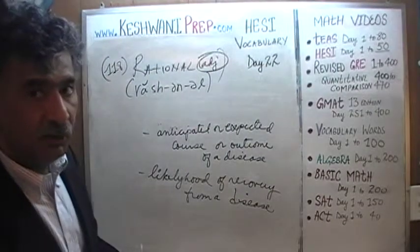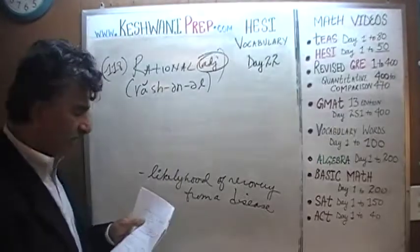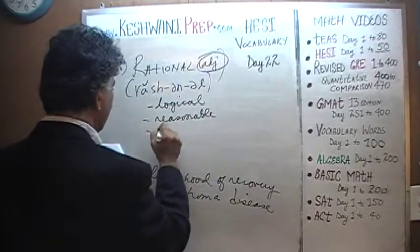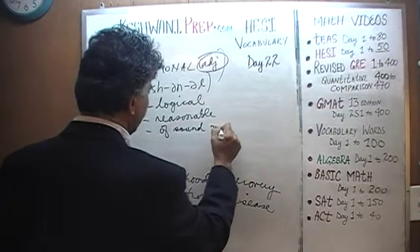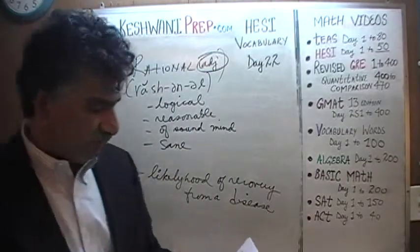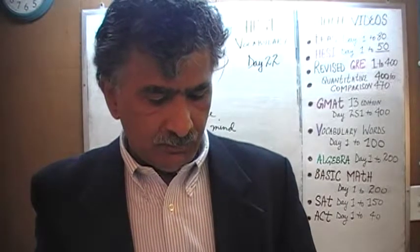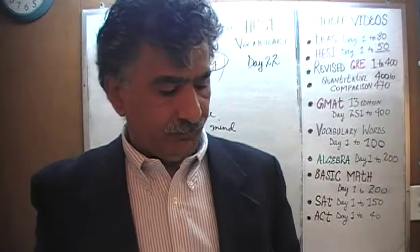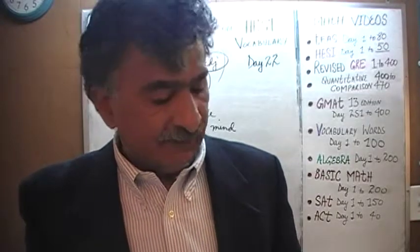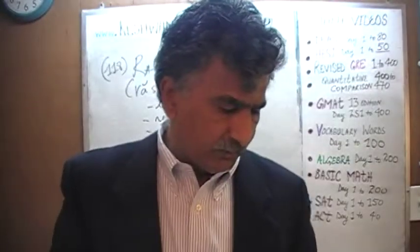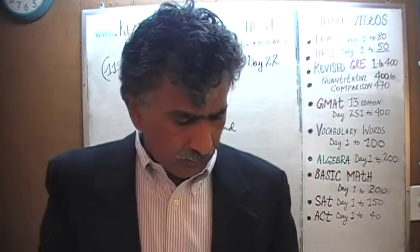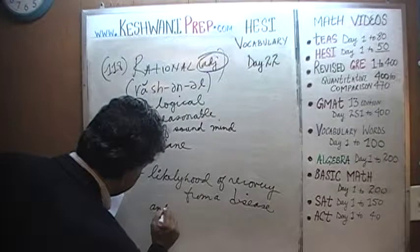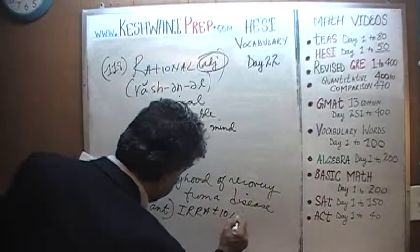If something is rational, it is logical, it is reasonable. Something described as rational is of sound mind — it is arrived at by a sound, sane person. The antonym of rational would be irrational.